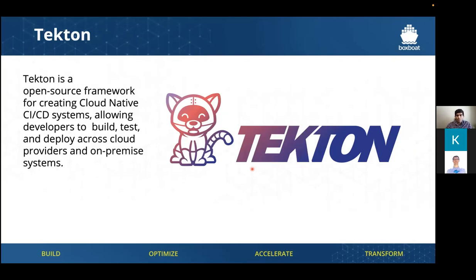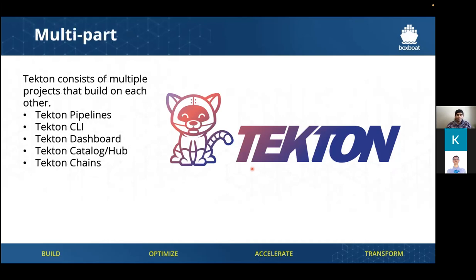What is Tekton? Tekton consists of a lot of different parts. It's basically an open source tool used to create CI/CD systems across any cloud provider or on-prem system. Developers can use it to build pipelines, do tests, and deploy different images and applications into a Kubernetes cluster or whatever else you need. Tekton consists of multiple different projects — we'll walk through each of these and give you more depth in the demo coming up later.